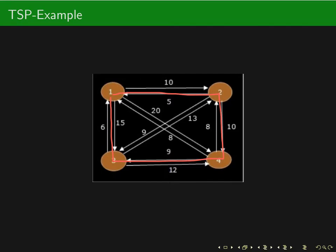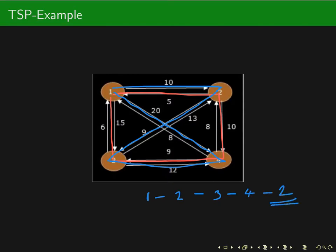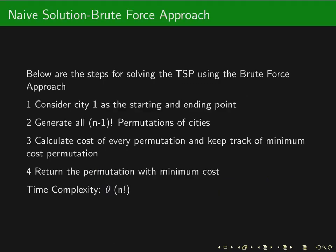There can be other feasible solutions as well. For example, I can choose a path like one to two, two to three, three to four, and then come back to one. However, going from one to two, then two to three, then to four, and back to two is not allowed — you cannot visit a city more than once.